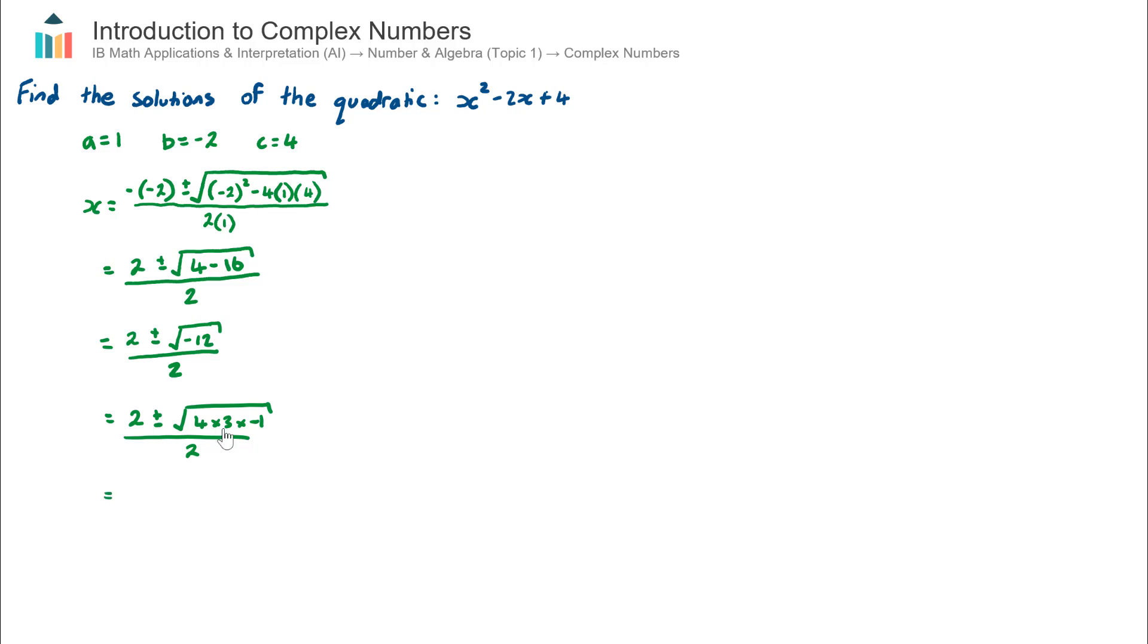Now using my knowledge of surds, I can actually break up these three factors that are all under the same square root sign into three individual surds. So this will become 2 ± √4 × √3 × √(-1) over 2.